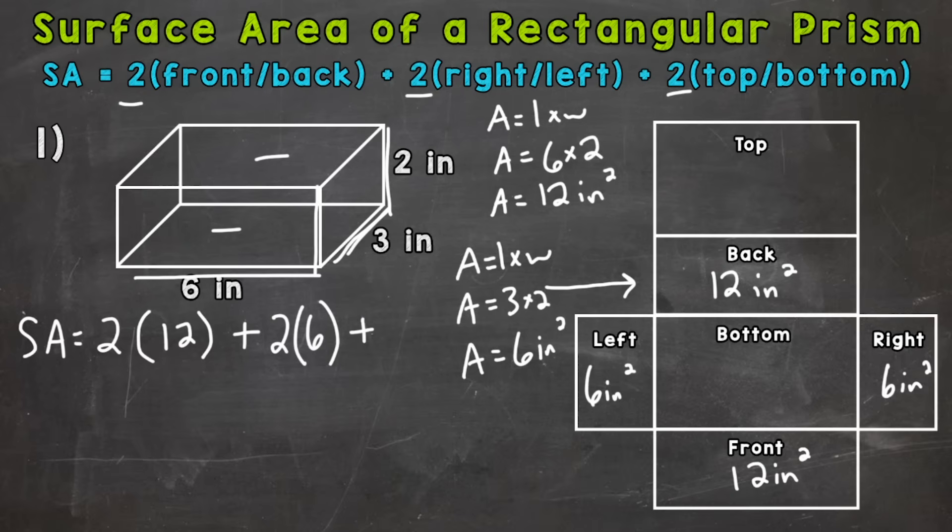And lastly, we need to do the top and the bottom. So we're going to take a look at the top where we have a 6 by 3. So area equals length times width. Plug in 6 times 3.